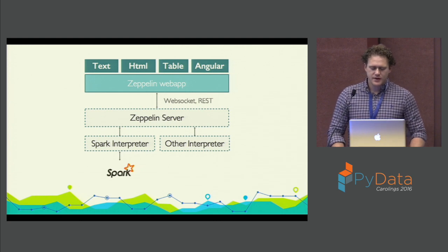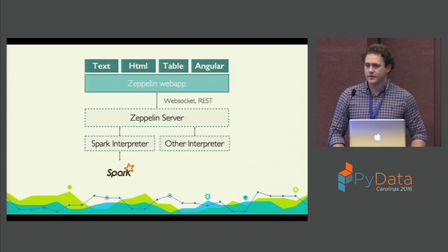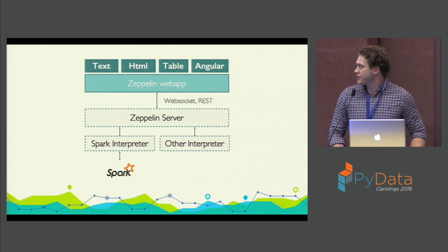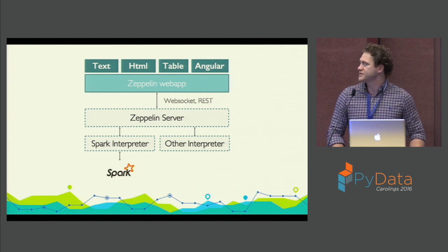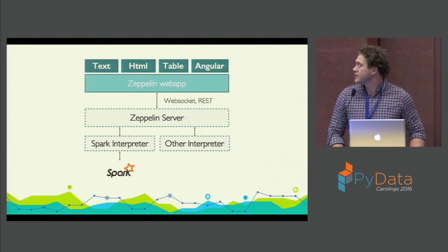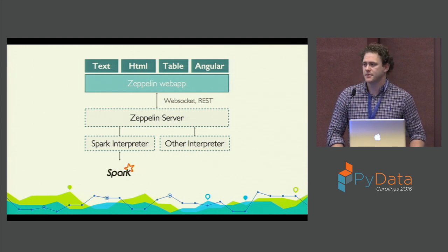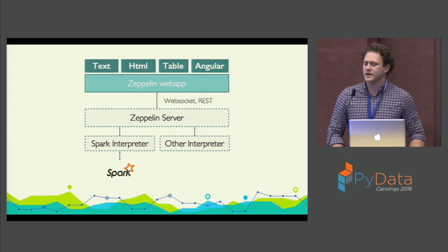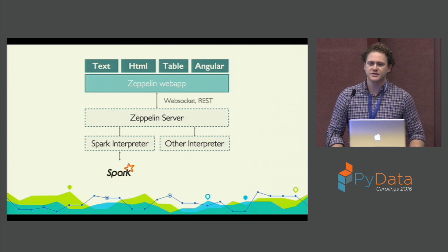Zeppelin sits between the Spark interpreter and the web output that you see. There's a Zeppelin server that runs in the back-end, you have a WebSocket with the REST API that presents the data to your web browser, and then you can view the data either as text, HTML, you can view it in tabular data, or it just recently upgraded to Angular 2.0 — it was Angular 1.6 before that.